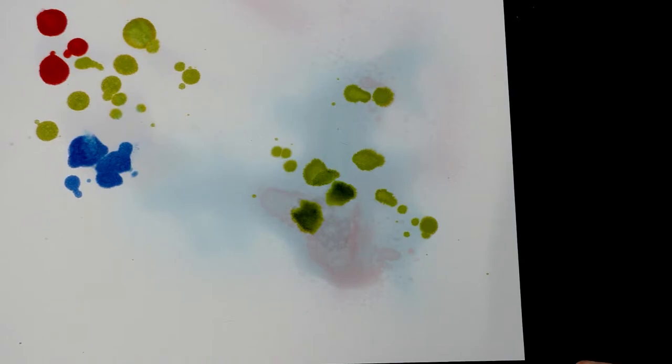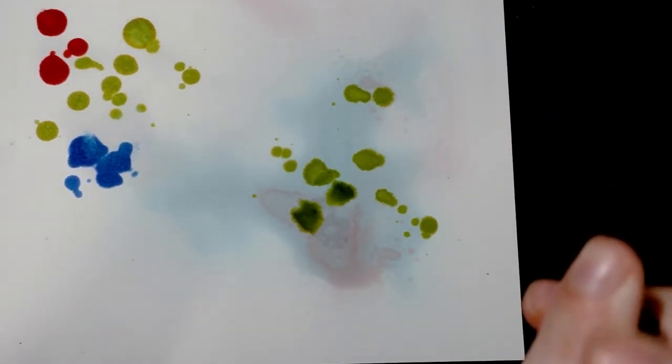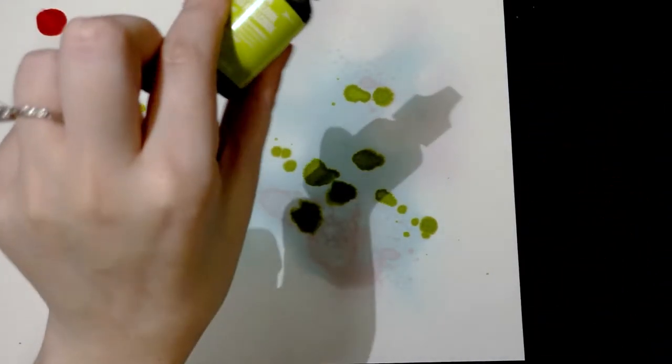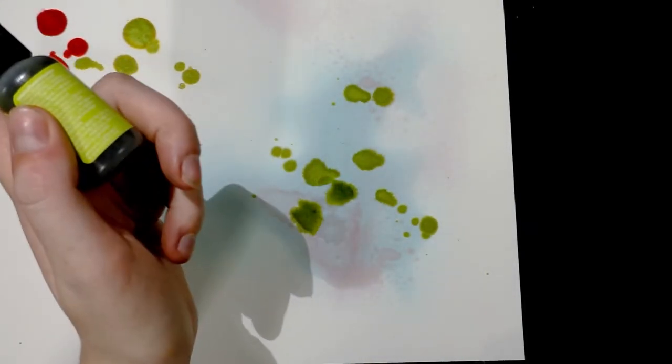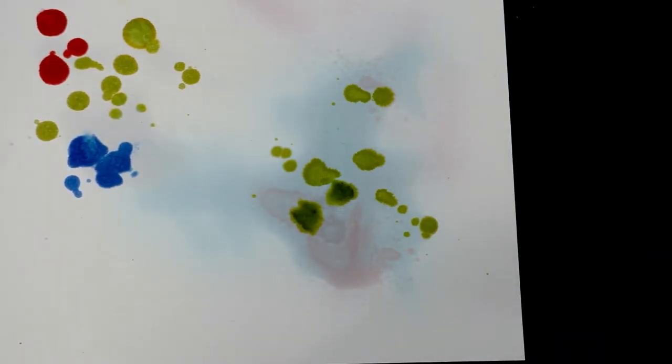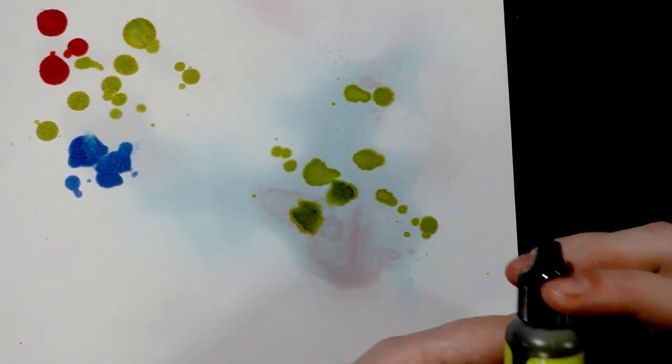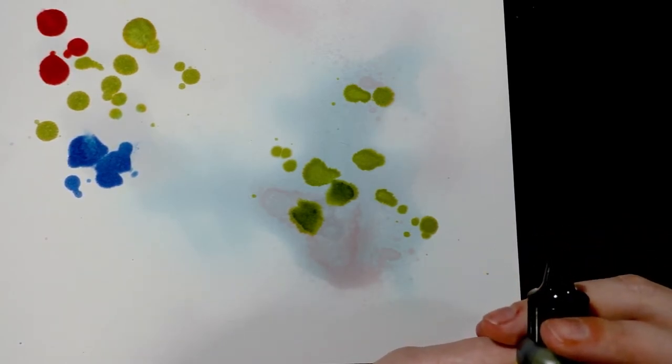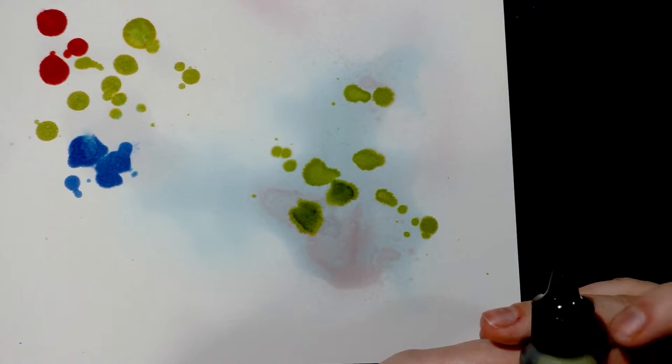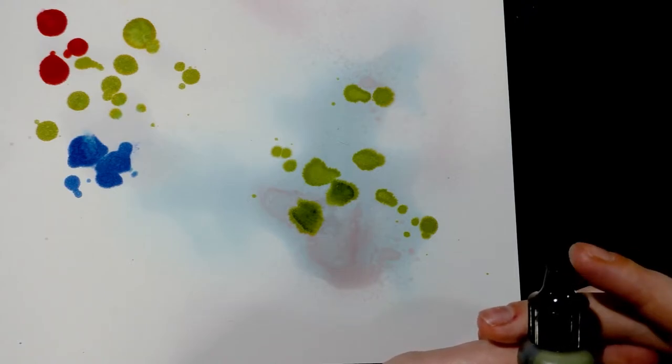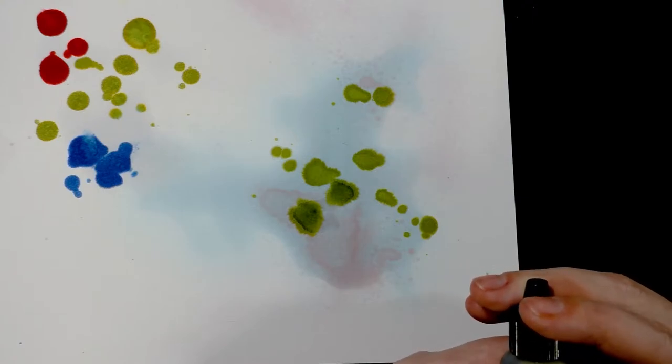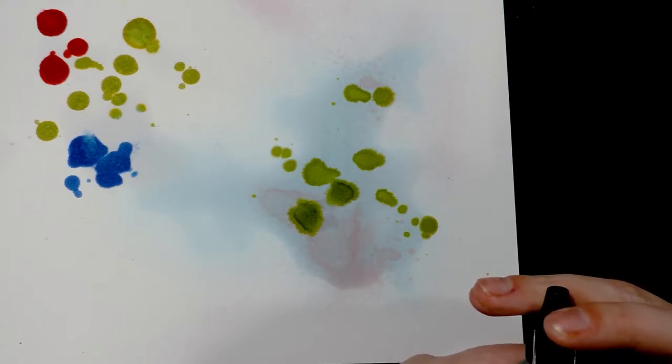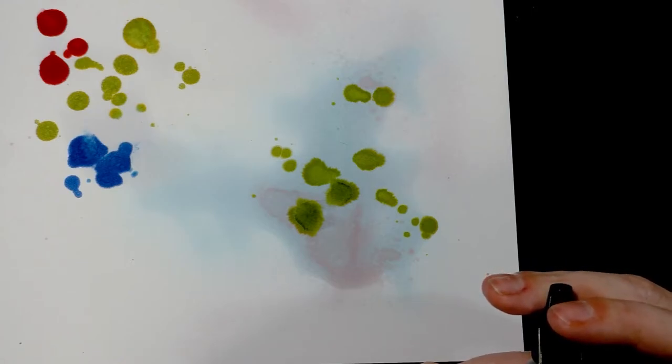It also seems like they're evaporating at the same speed. That's interesting. The first ingredient on the Ranger inks is actually ethanol, so that means they use the same kind of alcohol that the Windsor Newton pigment markers use. Then there's propylene glycol monomethyl ether, and then isopropanol, and then it switches to French.